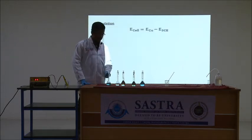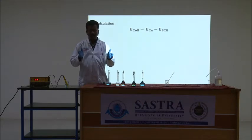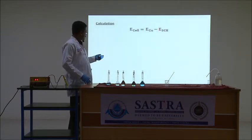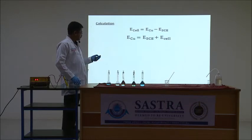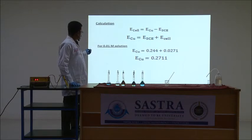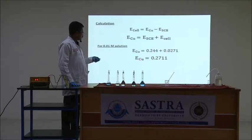To find the single electrode potential of copper, we are using a calomel electrode and a copper electrode. The calomel electrode acts as the anode and the copper electrode acts as the cathode. So the E-cell value is E-right minus E-left, or E-copper minus E-standard calomel electrode. To find E-copper, rearrange the equation and substitute the value. For each concentration, substitute accordingly. For 0.01 molar solution, substitute this value. The cell potential of the standard calomel electrode is 0.244 V. You find the single electrode potential of copper at 0.01 molar solution and you will get this value.